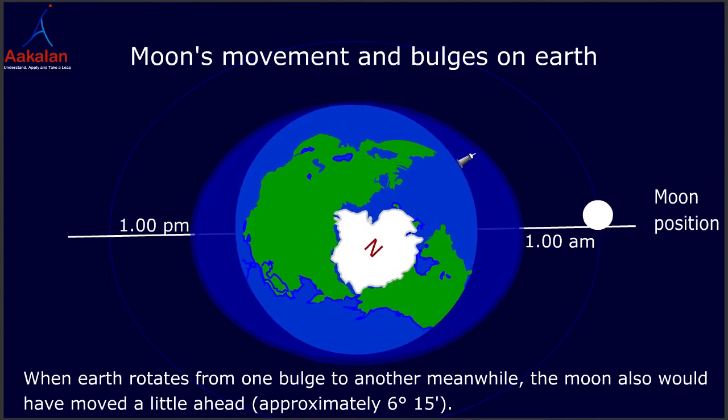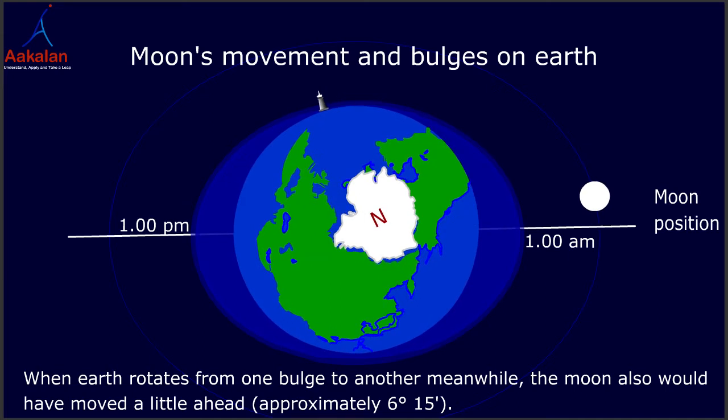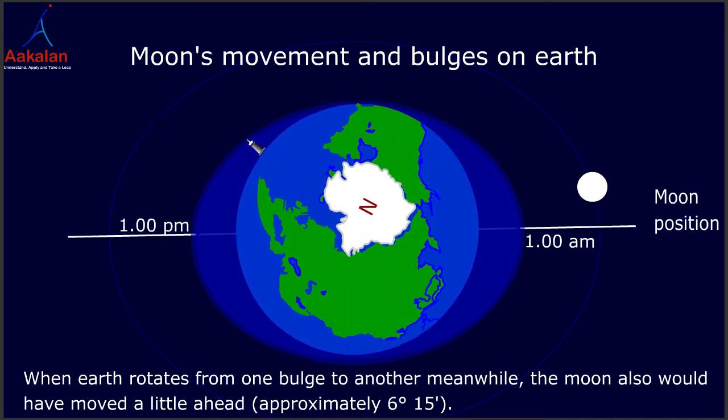When the Earth rotates from one bulge to another, meanwhile, the moon also would have moved a little ahead, approximately 6 minutes and 15 seconds.